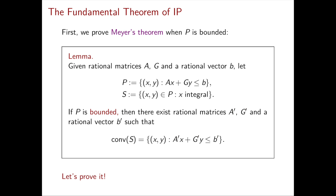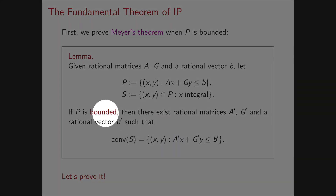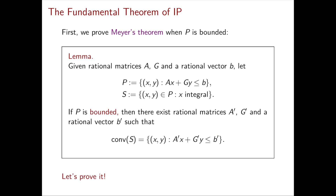We're going to prove this lemma, which looks very similar to the theorem we've just stated. The setup is the same: we have P and S as before. Now we're assuming that P is bounded and claiming that the convex hull is a rational polyhedron. What's the difference? We're assuming P bounded, and we are not showing the second part of the theorem. This is just point one of the previous theorem, specialized to the bounded assumption. We don't need the second point because if P is bounded, the recession cone of both P and the convex hull will be just the origin.